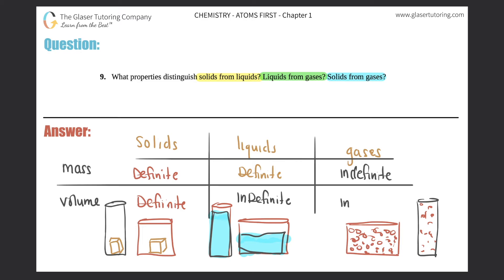So what properties distinguish solids from liquids? Well, here's the solids category, here's the liquids category. Seems that their masses are definite, but volume would change. So solid for volume has a definite versus liquids would be indefinite.